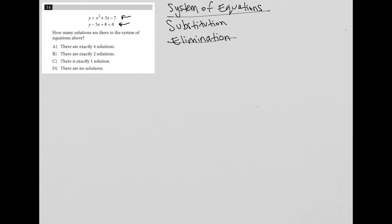But let's try out this substitution method. Substitution says, if I can isolate a variable, for equation one, I know that y is equal to x squared plus 3x minus 7. I could take what I know y to be equal to—the x squared plus 3x minus 7—and I can substitute out this y right there for that.